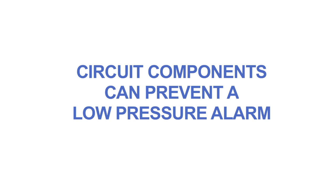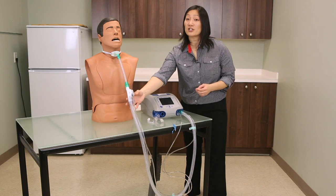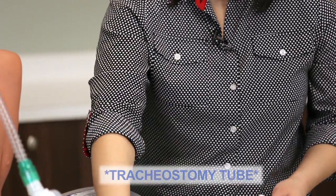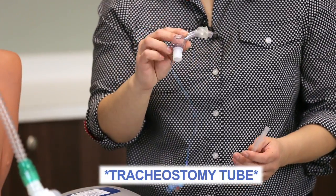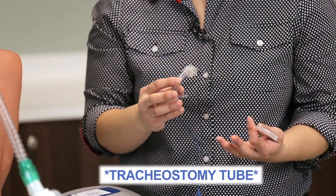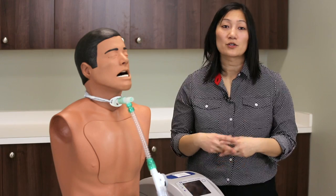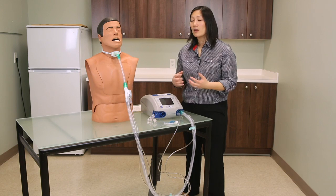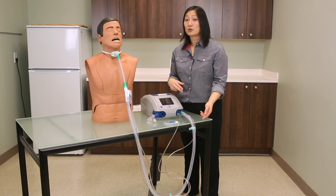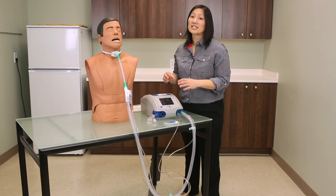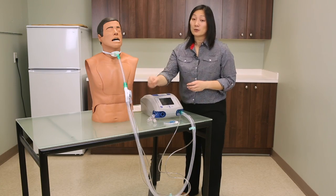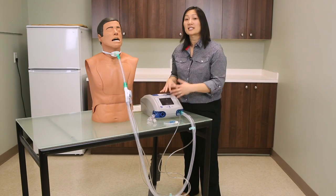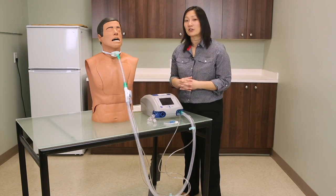The challenge with the low pressure alarm is that circuit components such as the ventilator tubing, the inner cannula, and tracheostomy can prevent the low pressure alarm from actually ringing or visibly alarming. This is due to the back pressure generated within the circuit when the ventilator is attempting to give a breath — that pressure is measured distally and is mistaken as pressure that can be delivered into the lungs.